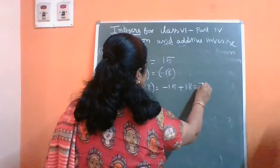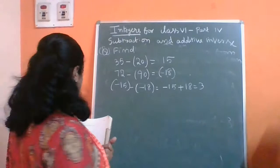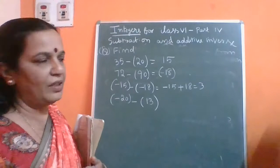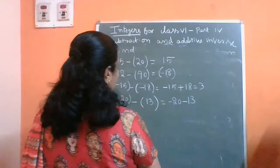The next question is minus 20 minus 30 minus of plus 13. Minus of plus 13 gives you minus 13, so it becomes minus 20 minus 30 minus 13, therefore the answer is minus 33. Wait — minus of plus 13 gives minus 20 minus 30, therefore the answer is minus 33.